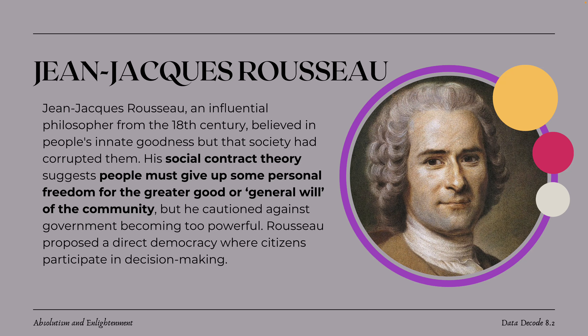Jean-Jacques Rousseau was another influential French philosopher of the 18th century. He believed in people's innate goodness but thought that society corrupted them. He developed a social contract theory, suggesting that people must give up some personal freedom for the greater good — the general will of the community. He cautioned against government becoming too powerful and proposed a direct democracy where citizens participate in their own decision-making.